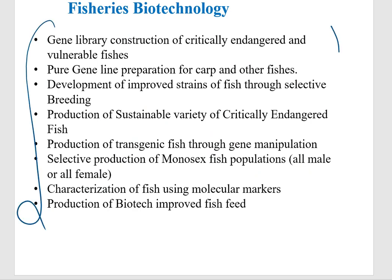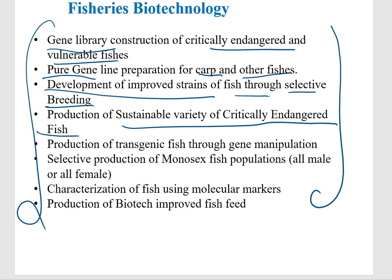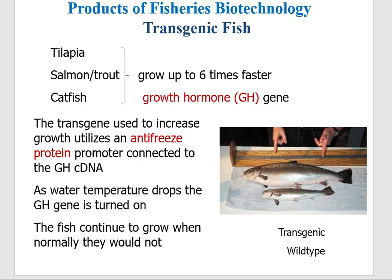In fisheries biotechnology: a gene library was created in which genes of critical, endangered, and vulnerable fishes were collected. Pure gene lines were prepared for carps and other fishes. Improved strains of fish were developed through selective breeding. Sustainable varieties of critically endangered fishes were produced. Transgenic fish were produced through gene manipulation, and monosex fish populations were developed. Characterization of fish using molecular markers and production of biotech-improved varieties was also accomplished.